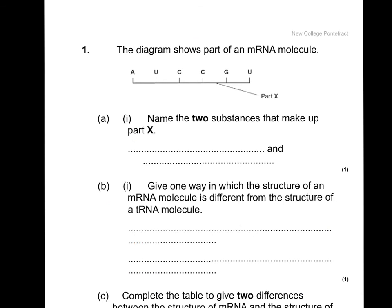This is an RNA question. It shows a part of an RNA molecule and asks you to name the two parts that make up part X. You should be able to identify part X as the sugar-phosphate backbone. Part B asks one way in which the structure of mRNA is different from tRNA. There's no difference in the way the nucleotides are made, but you should think about the shapes of the molecules. The most important point is that tRNA folds up into a clover-leaf shape, which is held by hydrogen bonds.